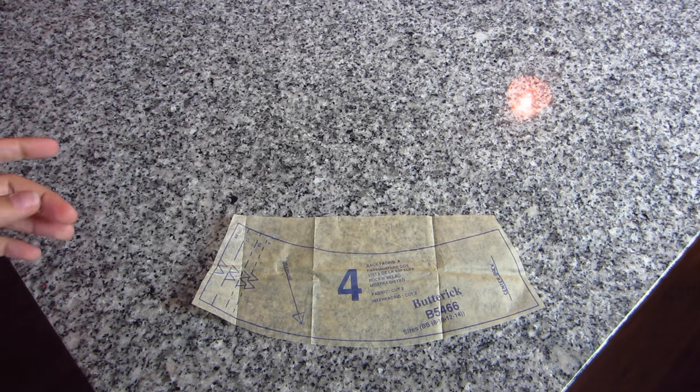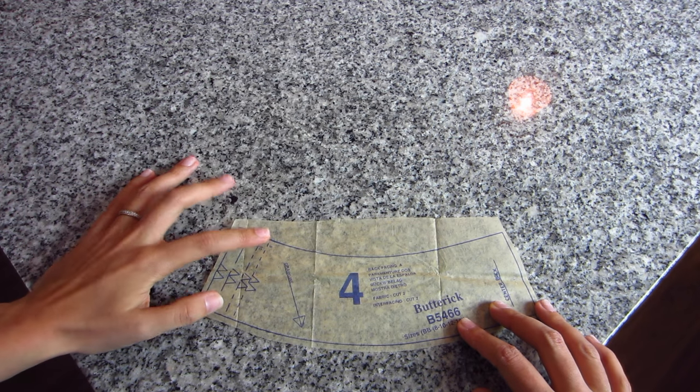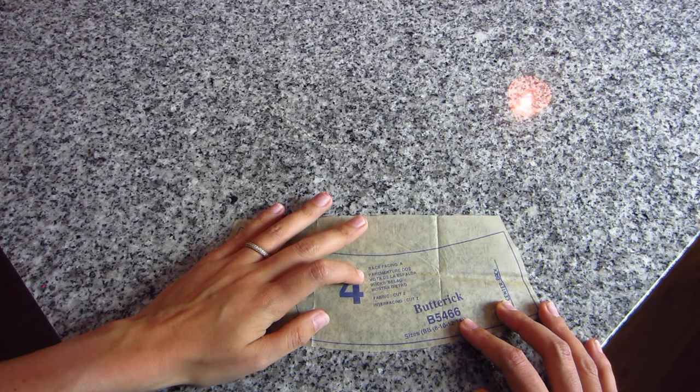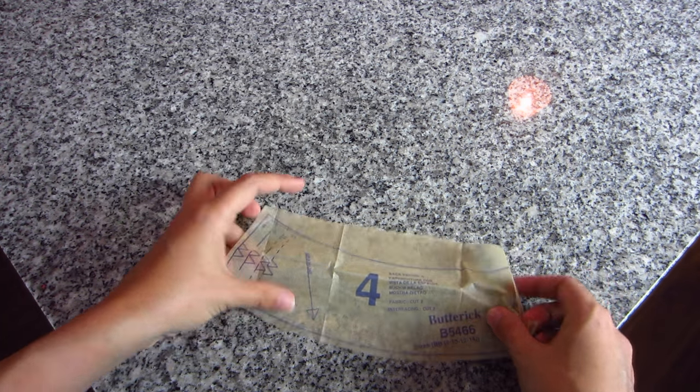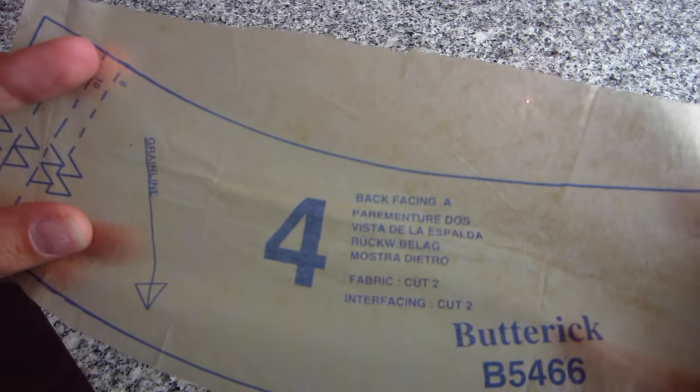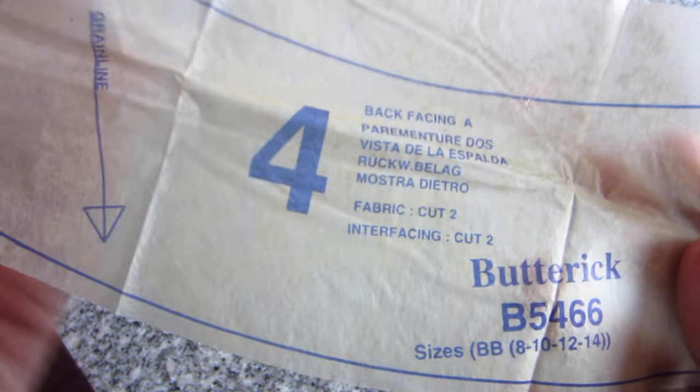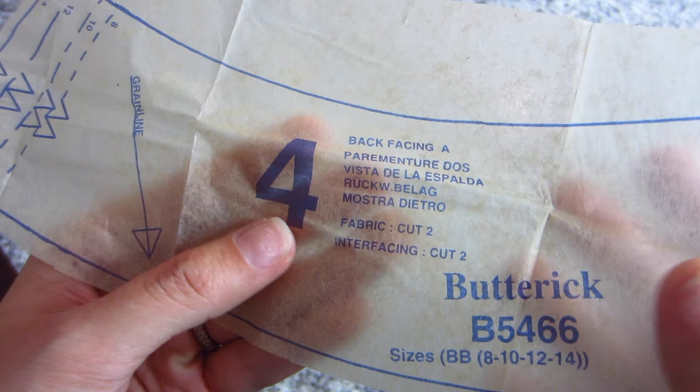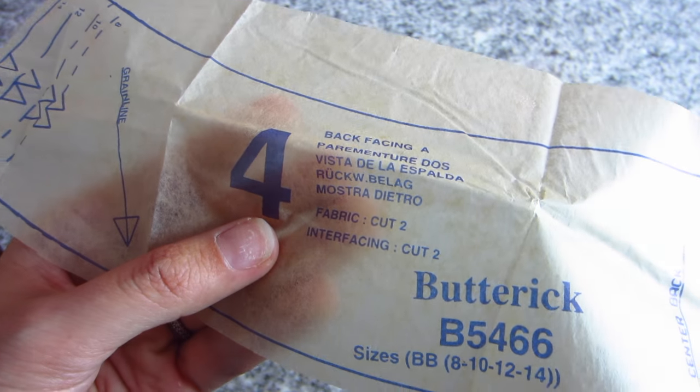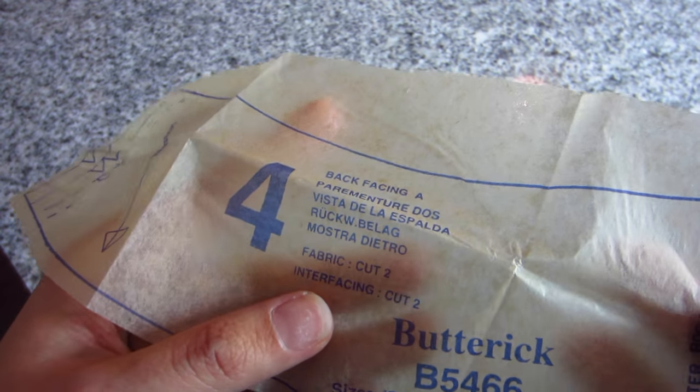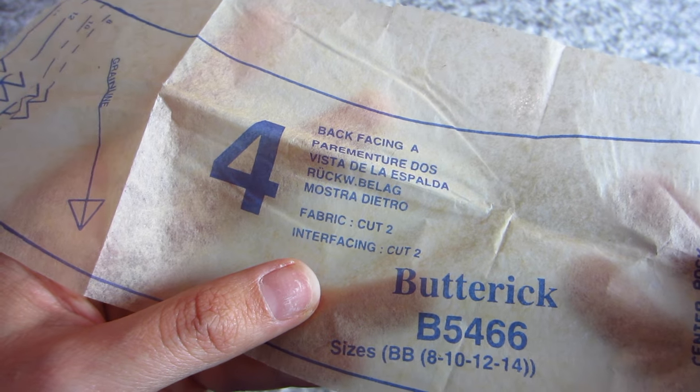Here is another pattern piece. This one is for version A, it's the back facing piece number 4. I wanted to show you this because in addition to telling you how much fabric to cut out like the skirt front and skirt back did, it also tells you how much interfacing you need to cut out.